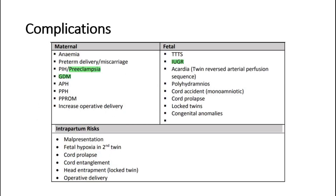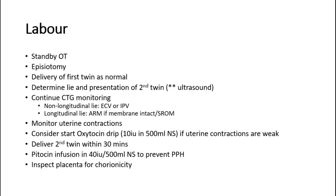Summary of labour scenarios: if both twins are vertex presentation (vertex-vertex), perform artificial rupture of membranes for the second twin to induce contractions. If the first twin is vertex and the second is non-vertex (breech or other lie), perform external cephalic version or internal podalic version of the second twin. If the first twin is non-vertex and not in longitudinal lie, perform an elective lower segment caesarean section.